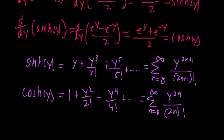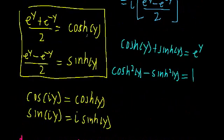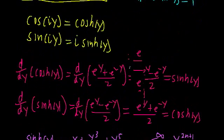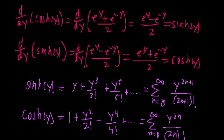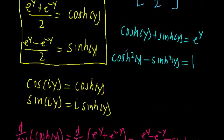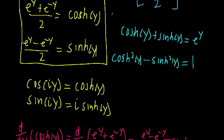So we've defined hyperbolic sine and cosine and found a bunch of properties relating to them. It's important to realize that although I used y as the variable, these definitions and properties hold for any variable — it's not strictly a y thing. Hopefully that gives you enough familiarity with hyperbolic trig functions.